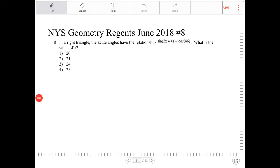In a right triangle, the acute angles have the relationship sine of 2x plus 4 equal to cosine of 46. What is the value of x?